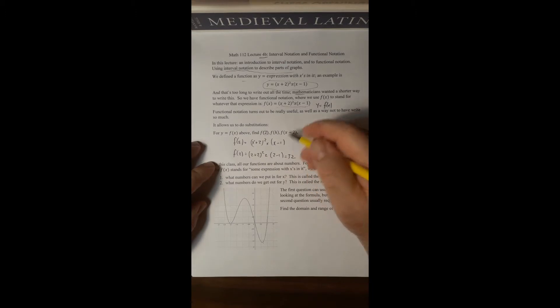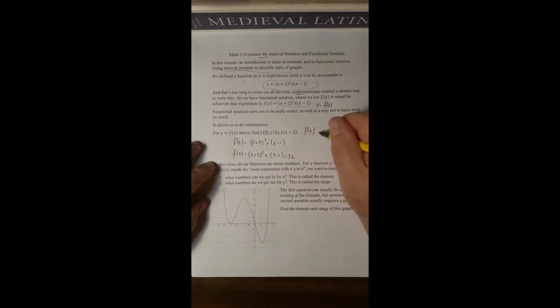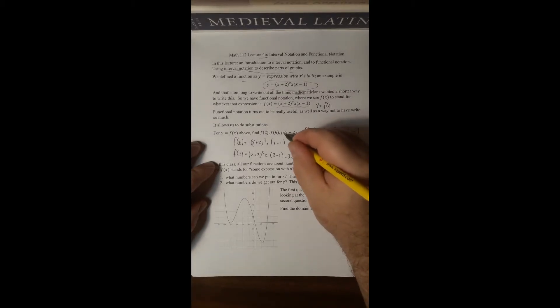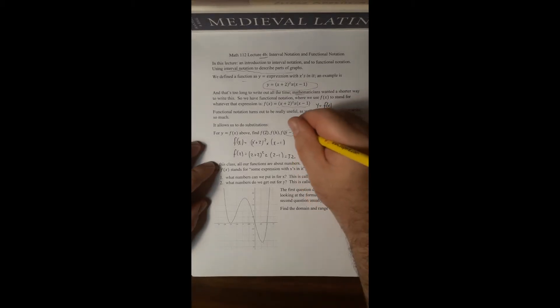What about f of h? If f of x is given as that expression, I replace x with h on both sides, giving me h plus 2 squared times h times h minus 1. Since I haven't told you what h is, there's nothing else you can do — you could multiply it out, but that would just be tedious and pointless at this point.